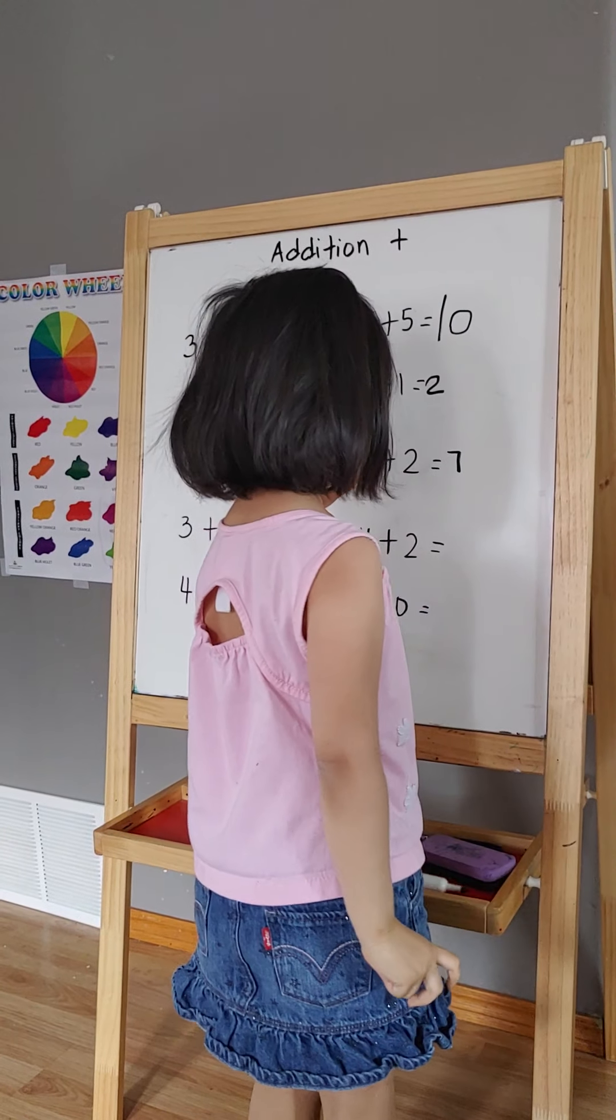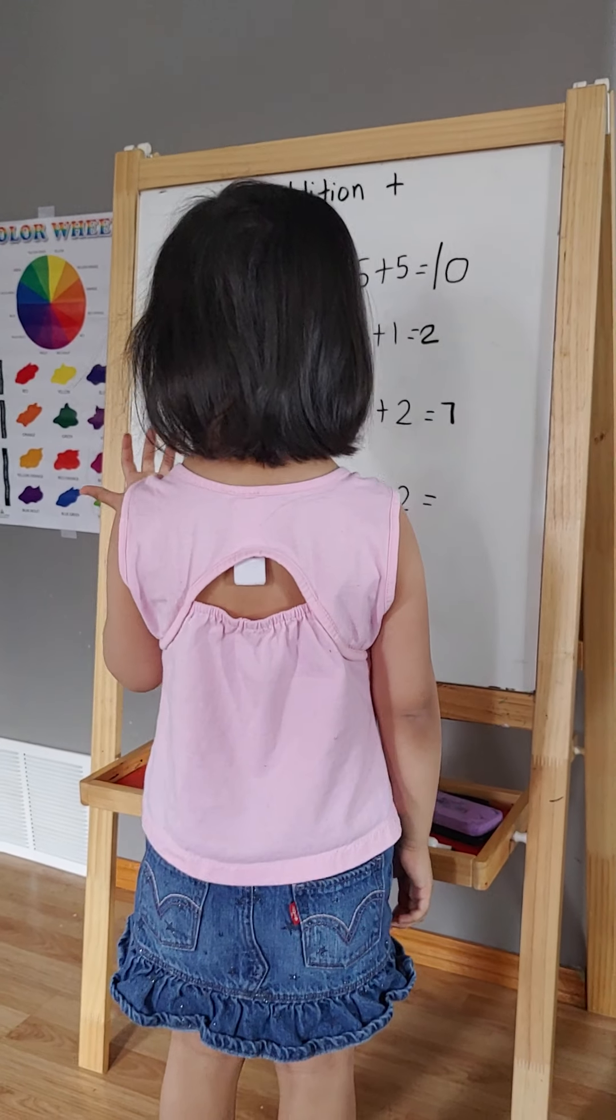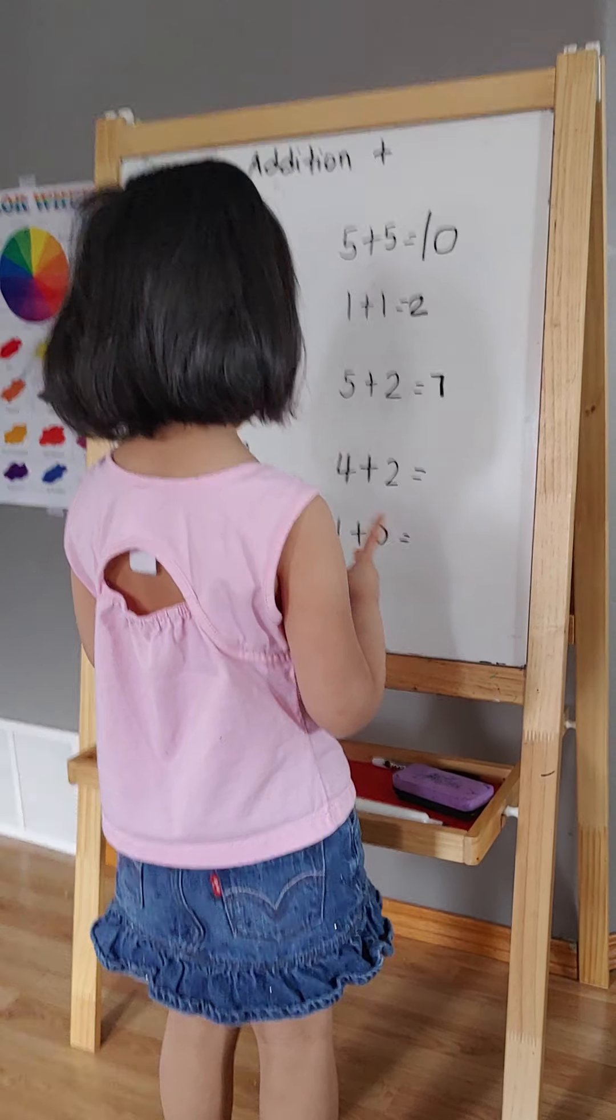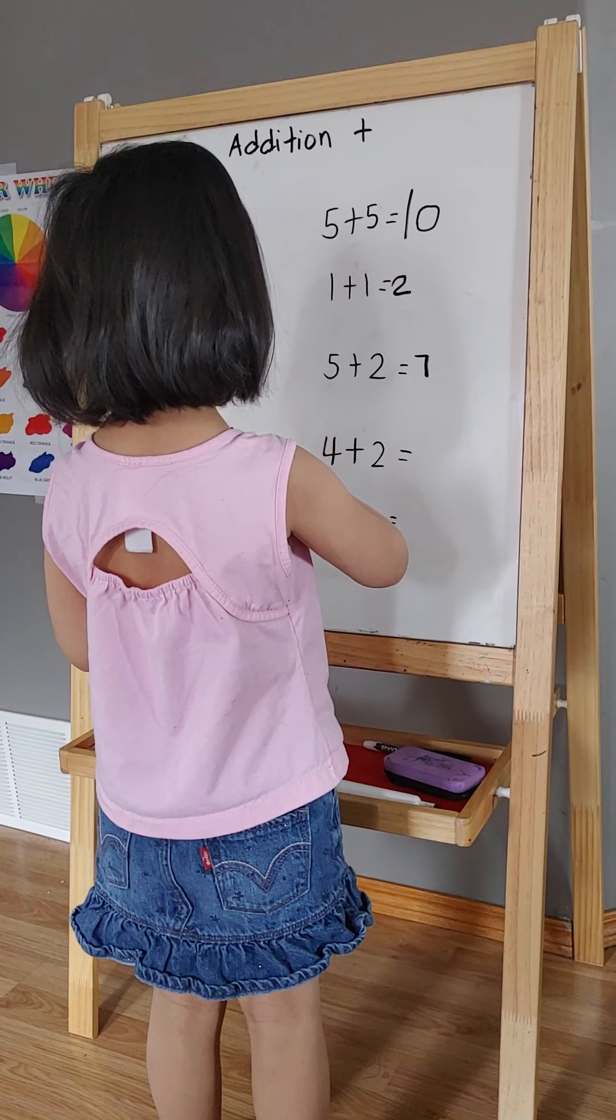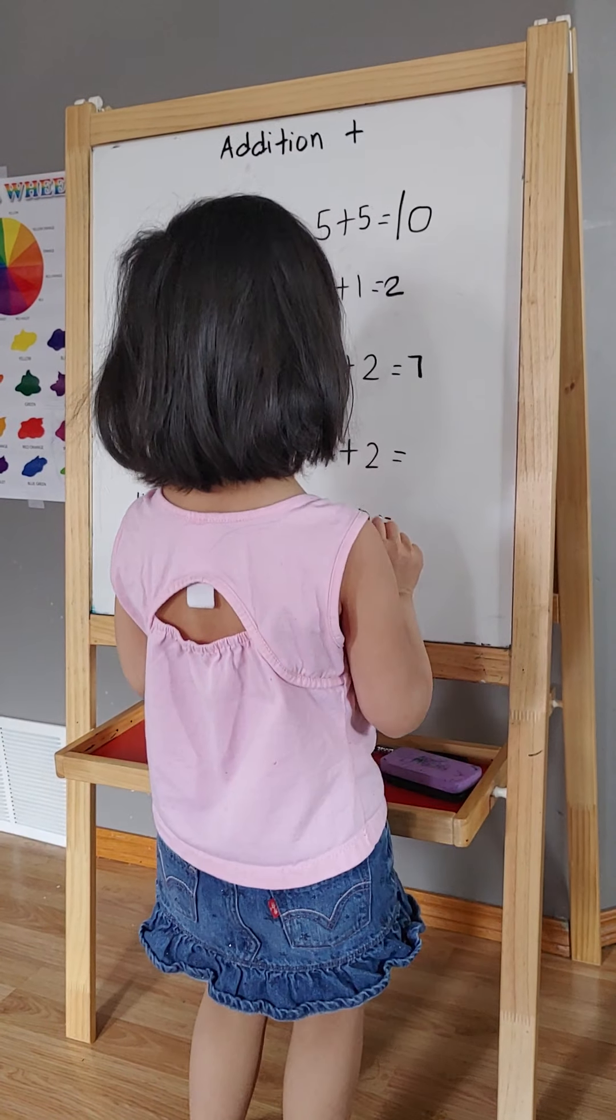Good job. Next. 4 plus 2. Put 4 on my finger and put 2 on my finger. So count them. 3, 4, 5, 6. 2, 3, 6.